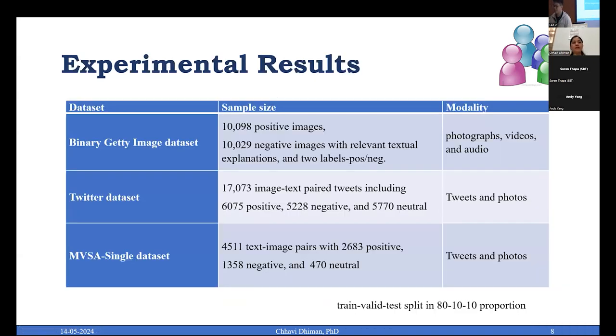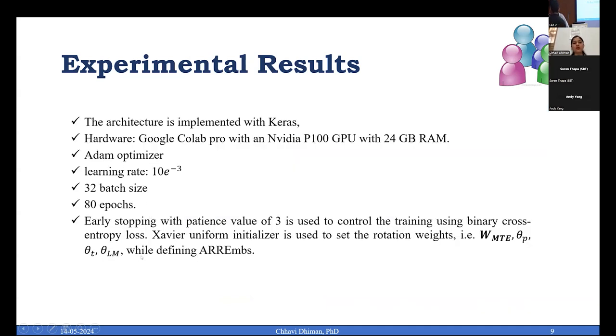Coming to the experimental result part, we have three datasets that we have utilized: binary Getty image dataset, Twitter dataset, and MVSA single dataset. These are certain parameters we have ensured to get optimized results, where we are using the Collab Pro platform with NVIDIA P100 GPU with 24 GB RAM, Adam optimizer with learning rate of 10 times e raised to the power minus 3, 32 batch size, 80 epochs, and we also had early stopping with patience value of 3, using the simplest binary cross entropy loss.